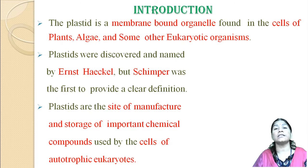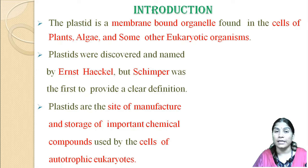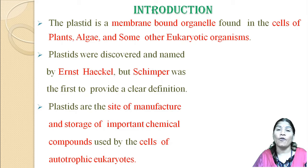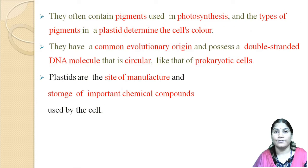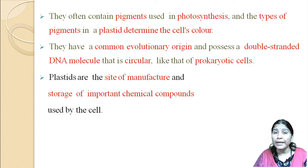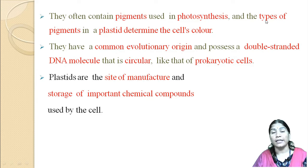Photosynthesis is the process through which plants prepare their own food material, and that's why they are called autotrophs. Plastids often contain different pigments which are used in photosynthesis.